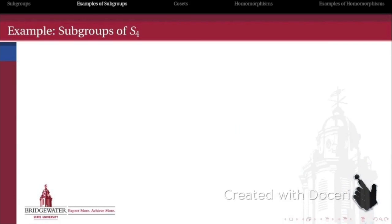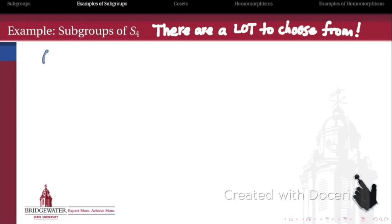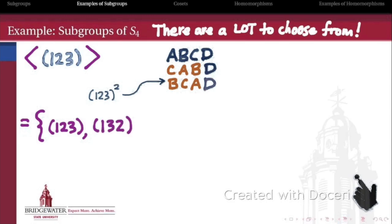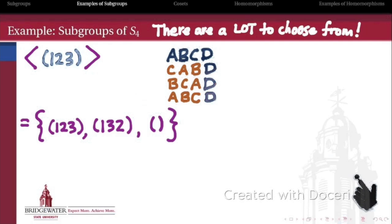Let's look at a more interesting example from a non-abelian group — the symmetric group on four symbols, S4. Let's pick the 3-cycle (1,2,3), which sends a,b,c,d to c,a,b,d. The cyclic subgroup generated by this element consists of: the element itself (first power); its second power (1,2,3) composed with itself, yielding (1,3,2), which sends a,b,c,d to b,c,a,d; and the third power, which composing again gives the identity, sending a,b,c,d back to a,b,c,d. So this cyclic subgroup has 3 elements.